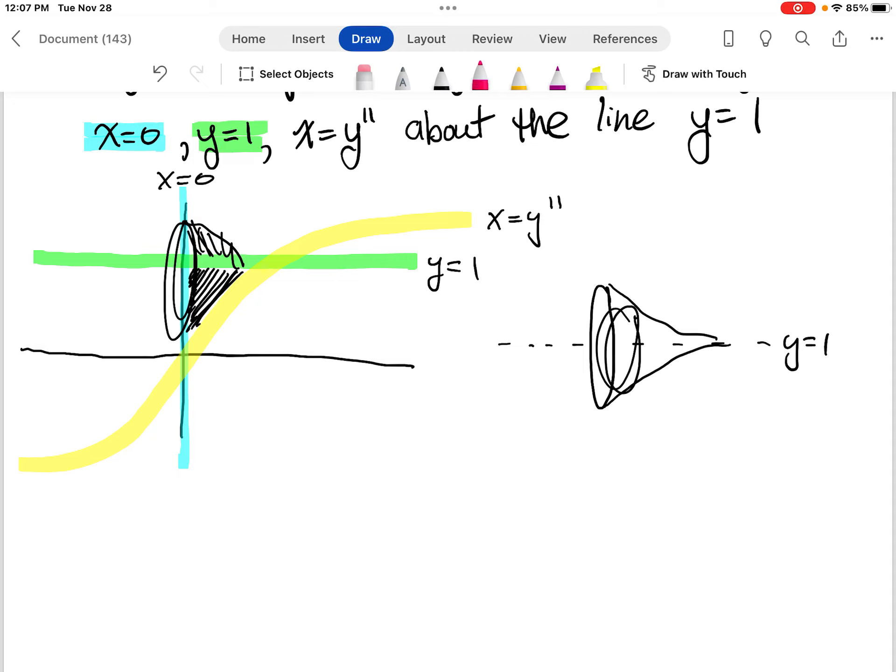All right, so if we make a cross section, imagine I split it like this. Right down here I slice it. Our cross section is going to be a disk. And remember the line y equals 1 is going to come through the center here.